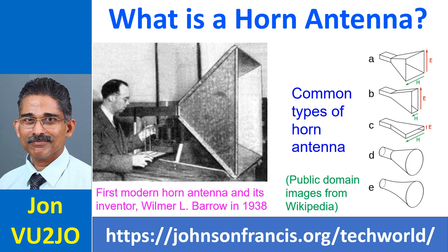A low cost 21 cm horn antenna radio telescope for education and outreach has been described by Harvard University. It has an aperture of 75 cm along the H plane and 59 cm along the E plane with a gain of 20 dB. The E plane is the direction of the electric or E field, while the H plane is the direction of the magnetic or H field in the waveguide.